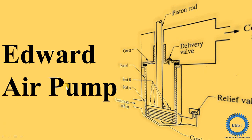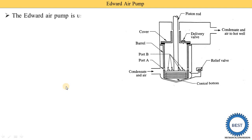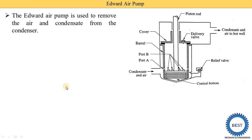In this video, I explain the Edward air pump. The Edward air pump is used to remove the air and condensate from the condensers. That is its main function.